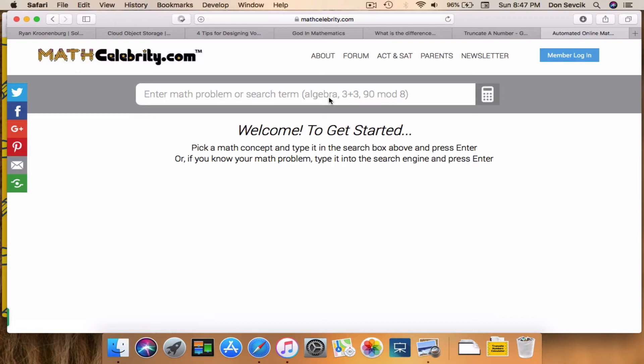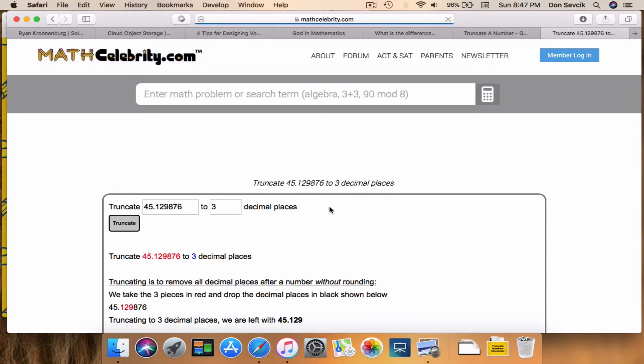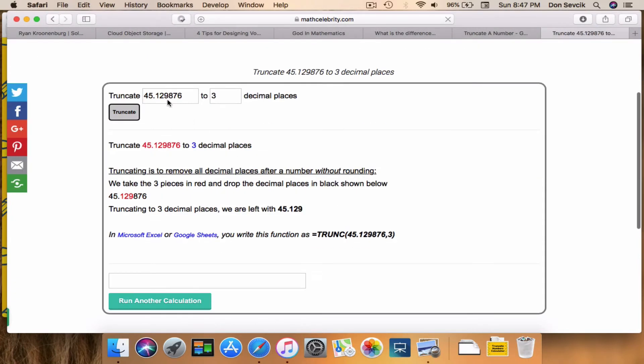And we're just going to pick a number, right? So let's say, truncate 45.129876 to 3 digits. We're going to run this, and it runs your number and your decimal places. So it's smart enough to figure out what you asked for.